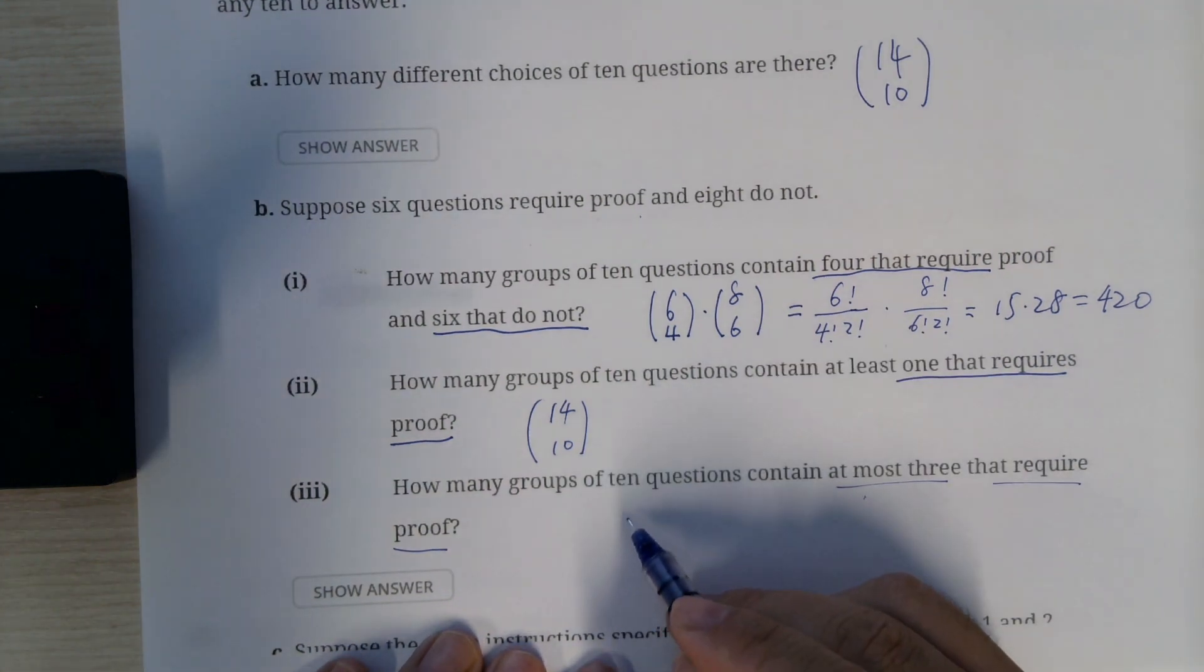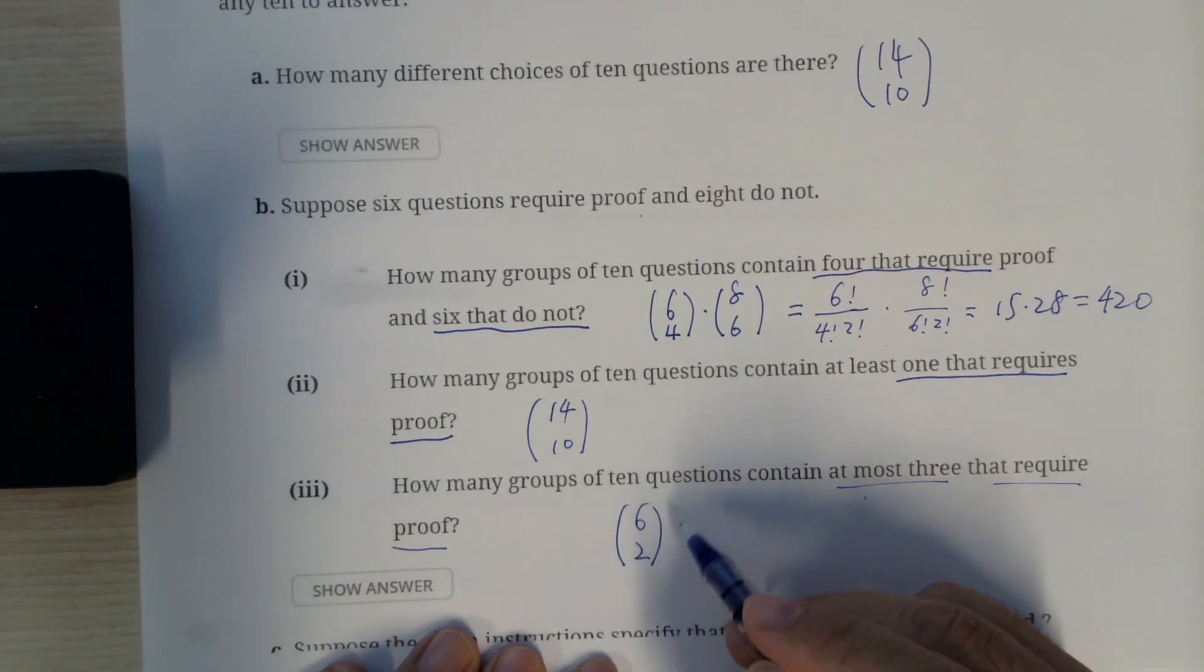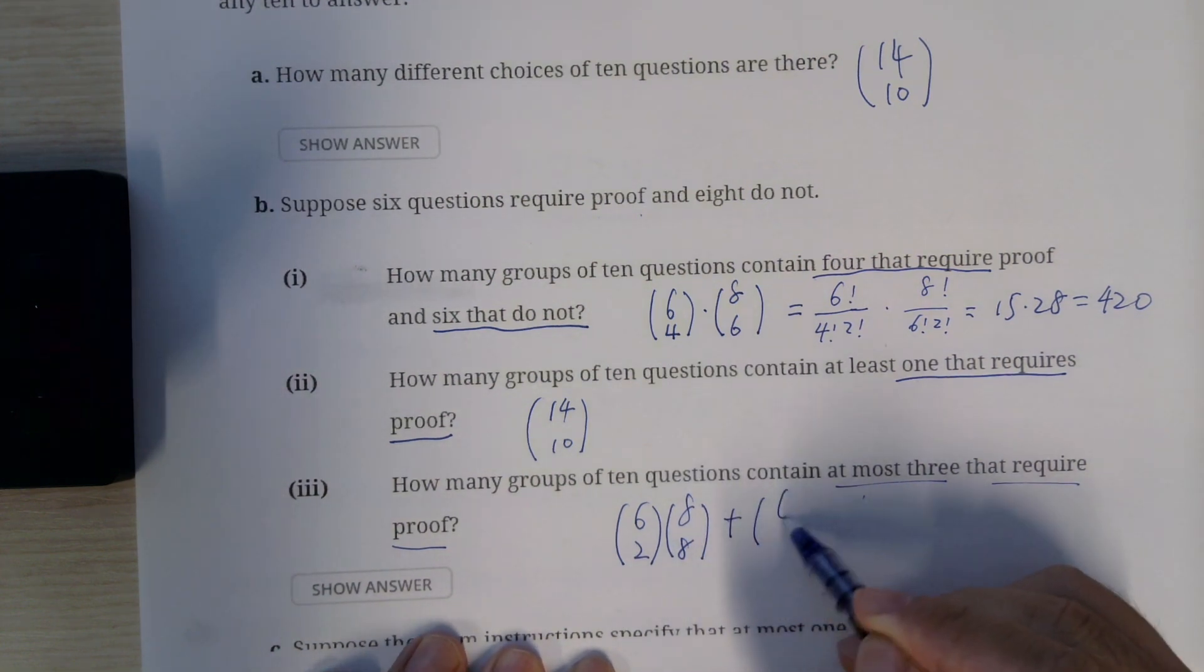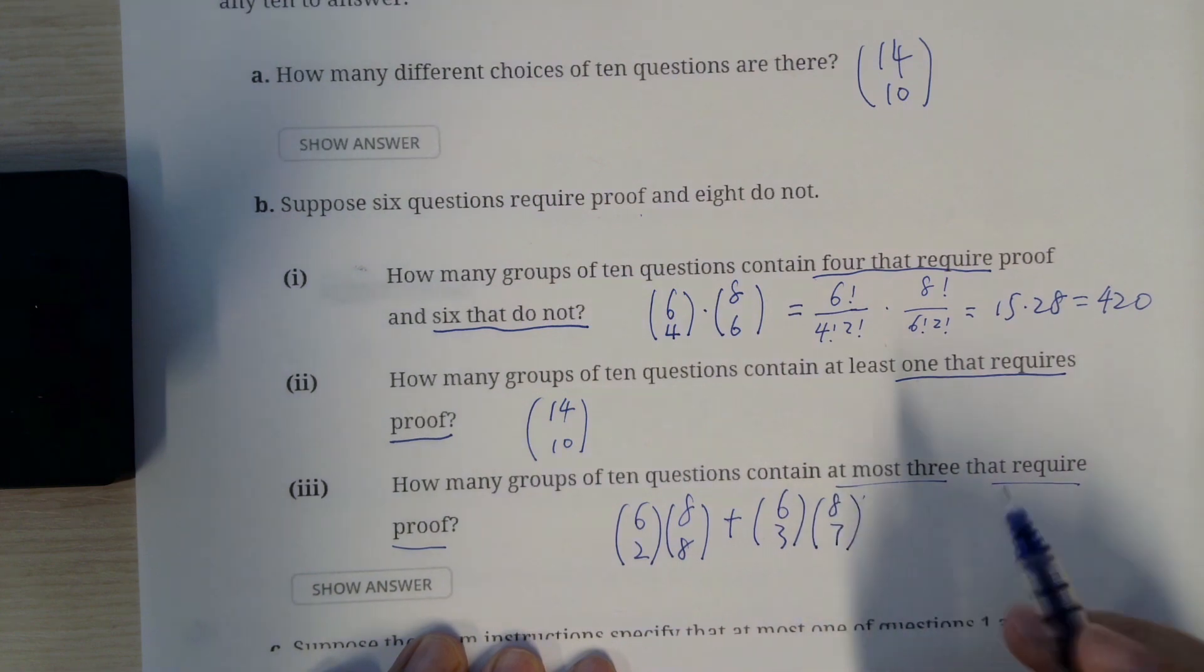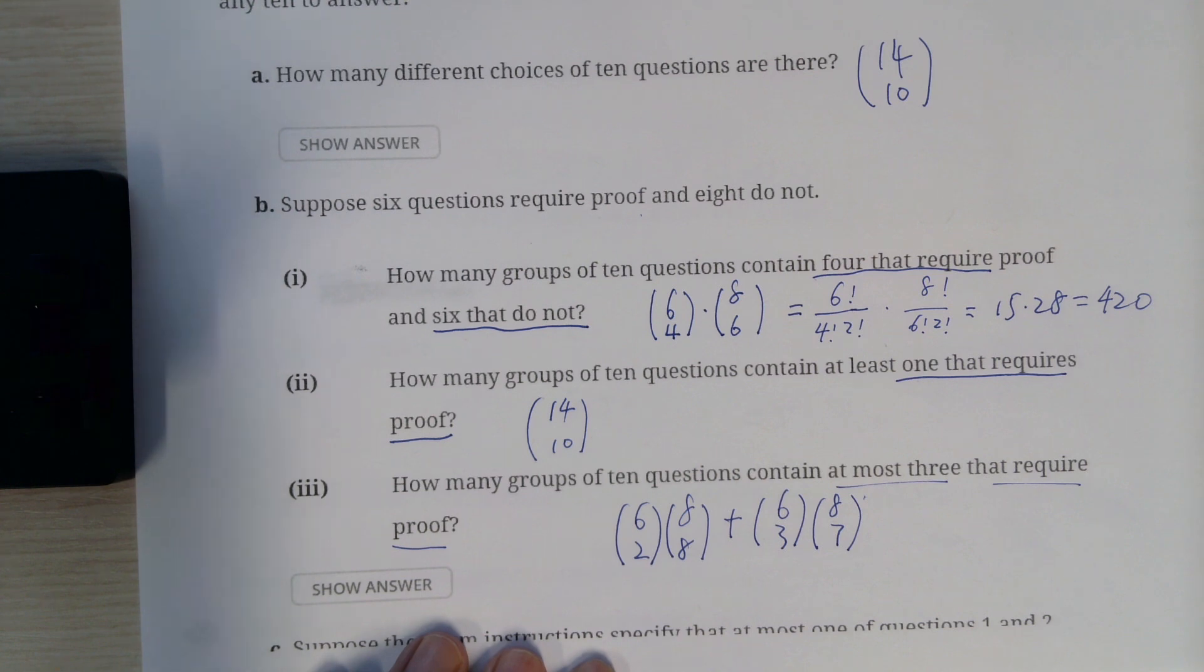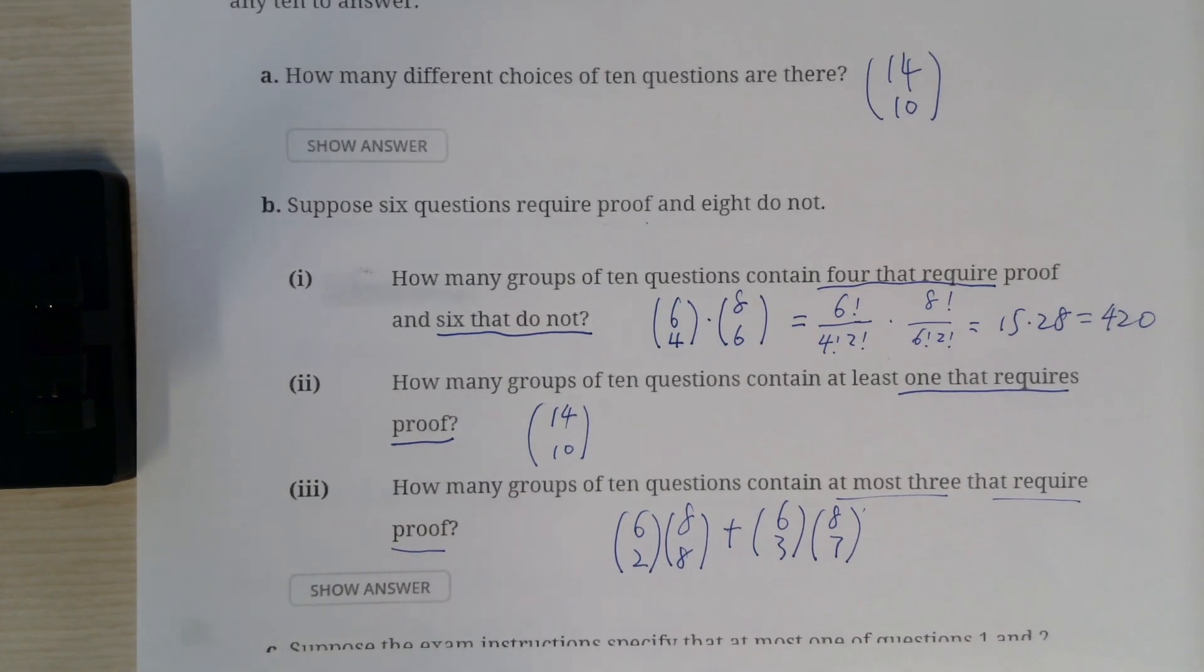So when you start to do the selection here, you have 6 choose 2 times 8 choose 8, and then plus 6 choose 3 times 8 choose 7. That's it, that's everything you need. So yeah, that's this question. I'll stop here and thanks.